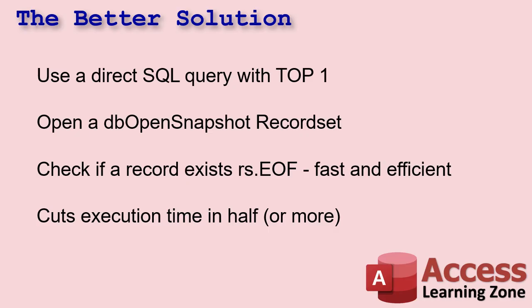The way you do this is you're going to use a direct SQL query — SQL in your code, not a saved query. We're going to open a recordset in DB open snapshot mode, which is the fastest. We're going to get just one record using the TOP 1 parameter in our SQL statement. Then we'll quickly check to see if any record exists — it's going to be one or zero. If we're at RS.EOF, that means there's no record. Fast and efficient — it'll exit out or we'll get the value. We're only pulling one record out of the table. I've had this cut my execution time in half: a form that took eight seconds to open dropped down to four.